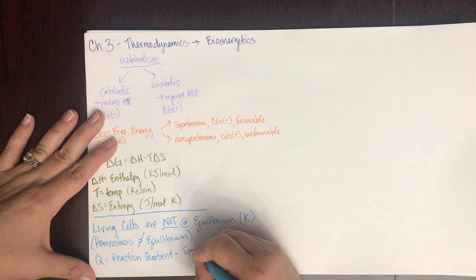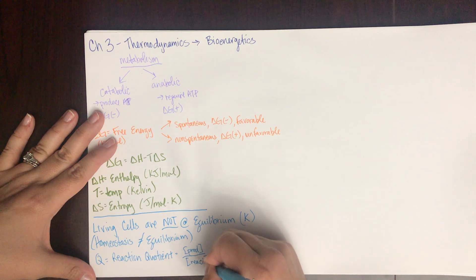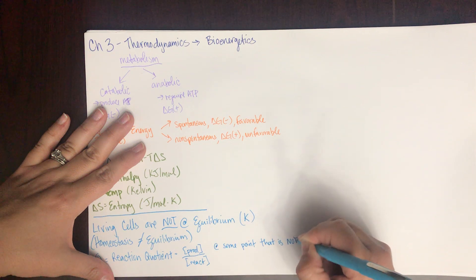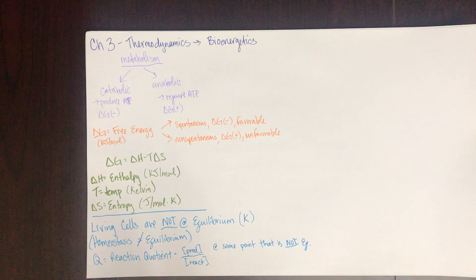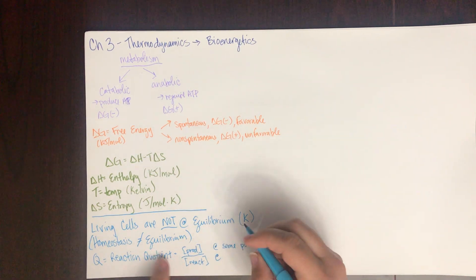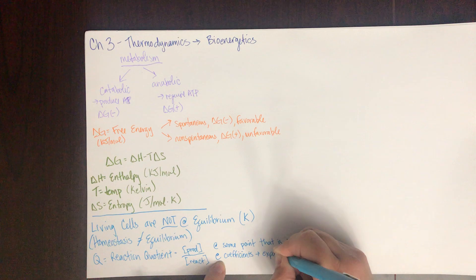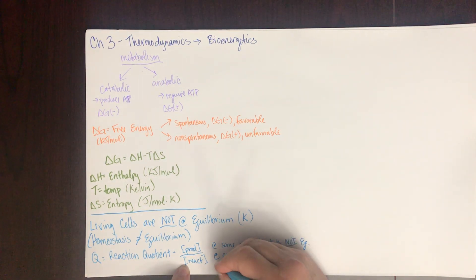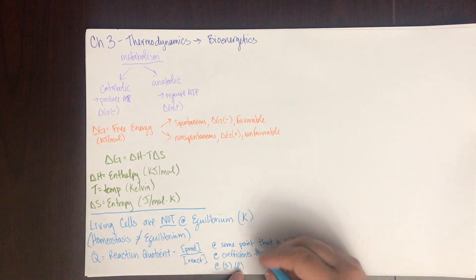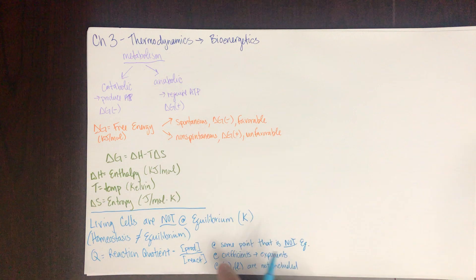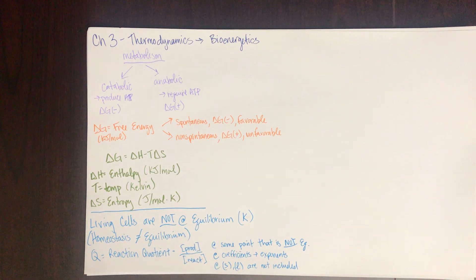When doing thermodynamic calculations in living cells, we use Q — the reaction quotient — which is the concentration of products over the concentration of reactants at some point that is not equilibrium. Also remember: when writing reaction quotients, solids and pure liquids are not included. Sometimes they're represented with a one, but they are not included in the reaction quotient.